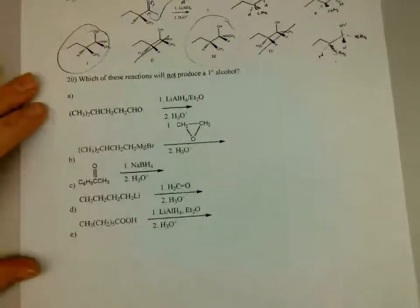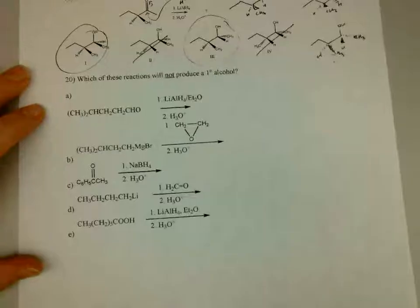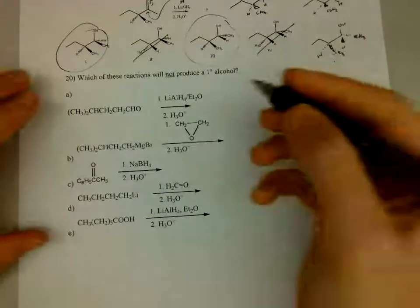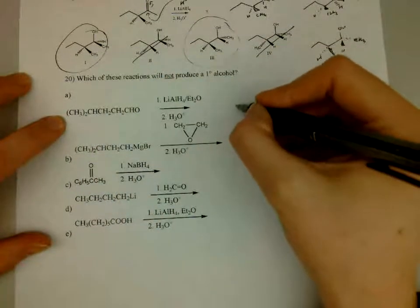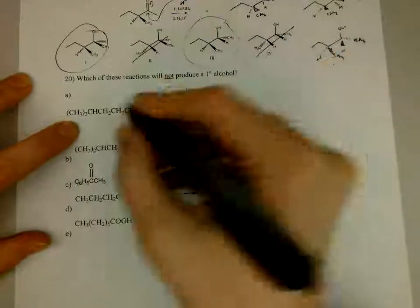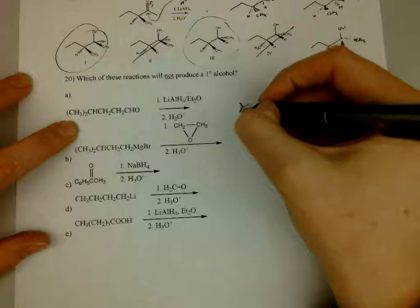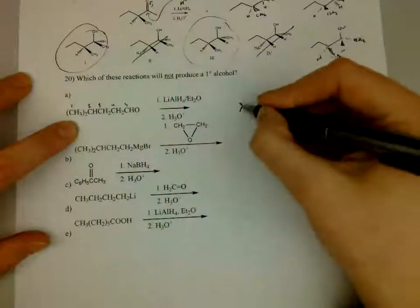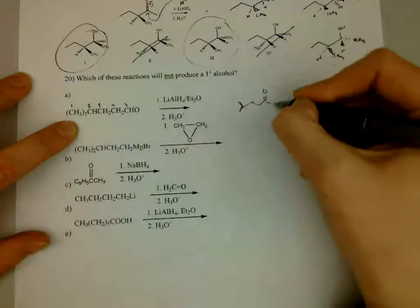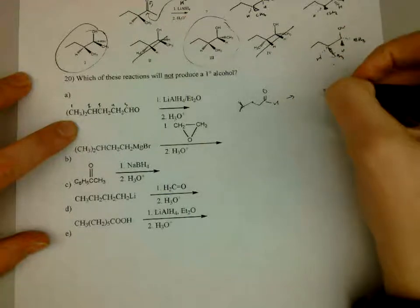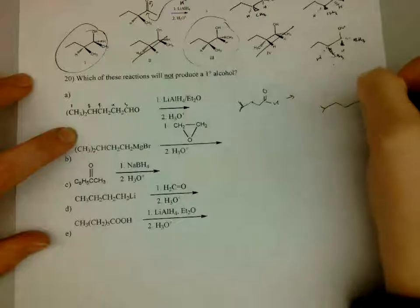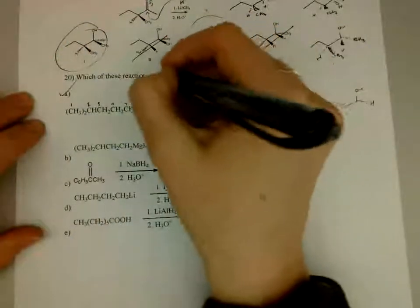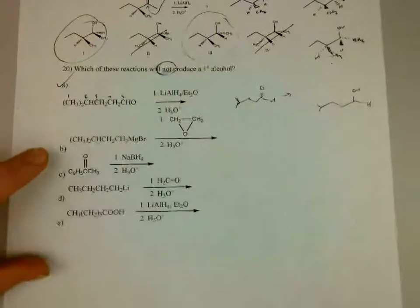Okay, and last but not least question 20. So which of these reactions will not produce a primary alcohol? In this one, there's not much for it. You just got to work through every single question. So this is an aldehyde with LAH. One, two, three, four, five. Looks like an aldehyde with LAH. That actually should go to a primary alcohol. Oh, it's will not, which one will not produce? So A should work.